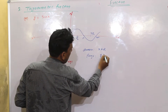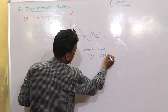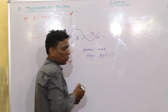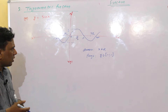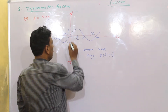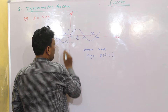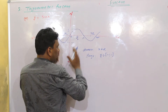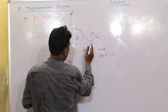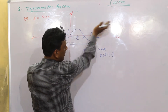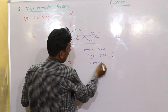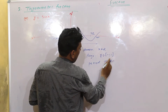sin x function में y belong to [−1, 1]. यह periodic function होता है - जिस तरीके से start हुआ है, after some length - 2π length के बाद graph originally repeat करता है। इनका जो period है वह 2π है - least period 2π.